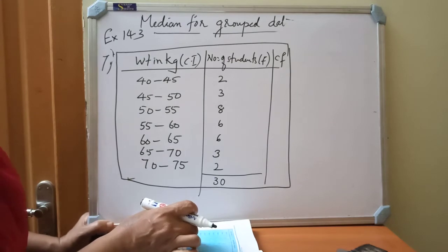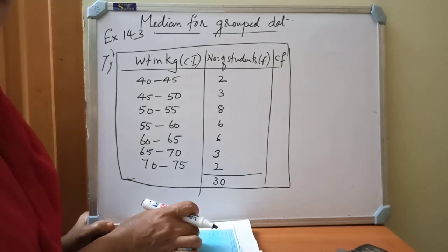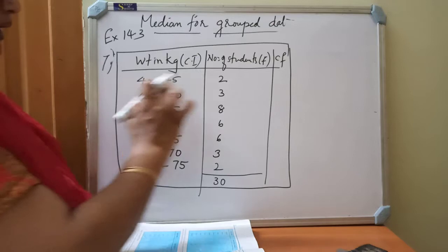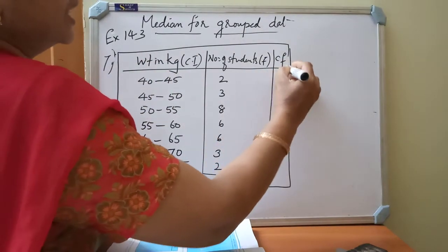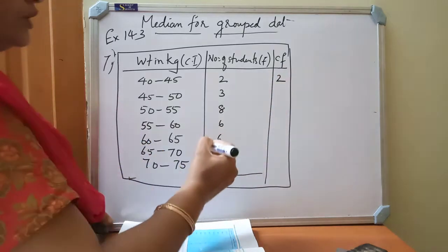So first for finding median what we must find out, we must find out the cumulative frequency. So we must find out the cumulative frequency. For that the frequency that is same as the first class cumulative frequency, both same.